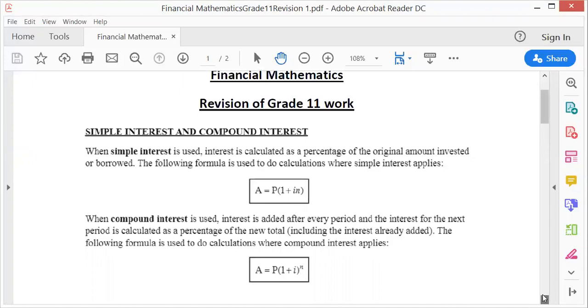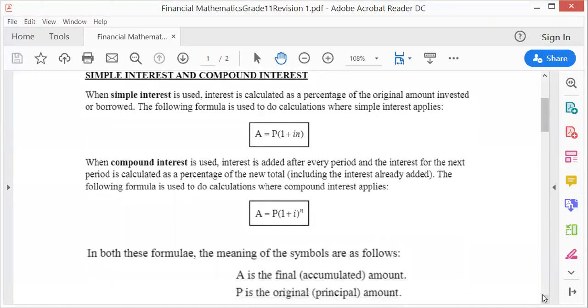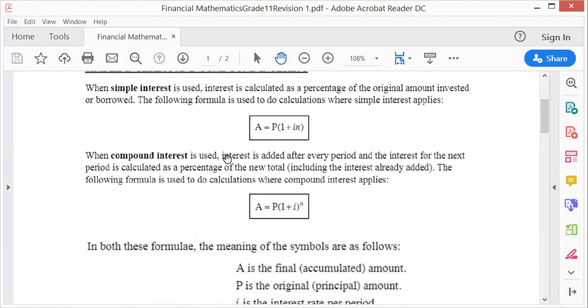Compound interest is used when interest is added after every period. Again, you can either borrow money or invest - if you borrow you pay back, if you invest you get money back. The formula is A = P(1 + i)^n.